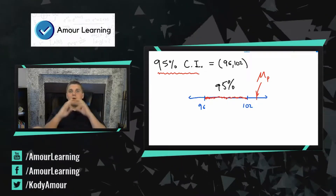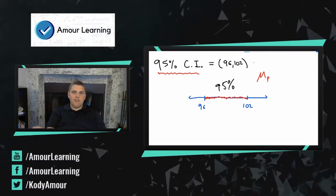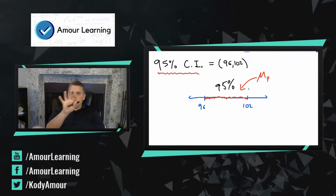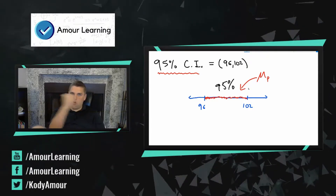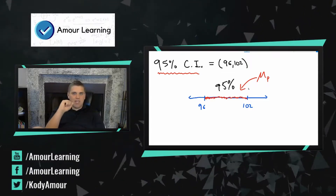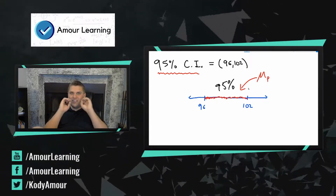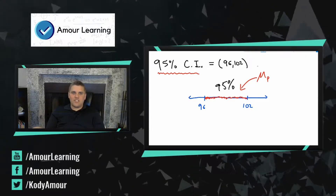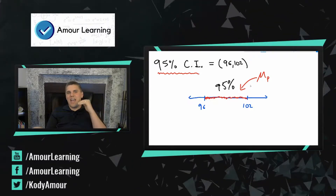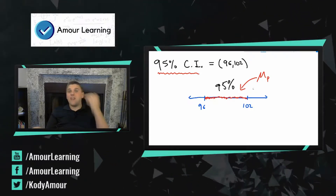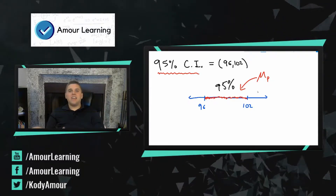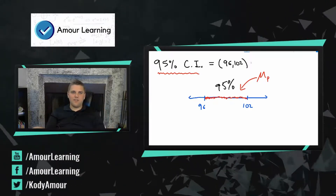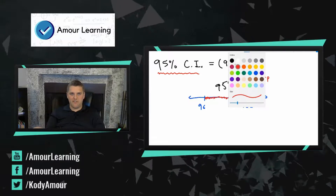There is a 95% chance that the true average is actually in this region, but that doesn't necessarily mean I've captured it. The second I claim I know exactly where it's at, I'm making a claim that would be considered a fact — which is not a very good thing to do. So I can't claim the average is between 96 and 102, but I can say with 95% certainty that it is. And to scientists, 95% is that special number they love — that is good enough, that is confident enough for a lot of people.